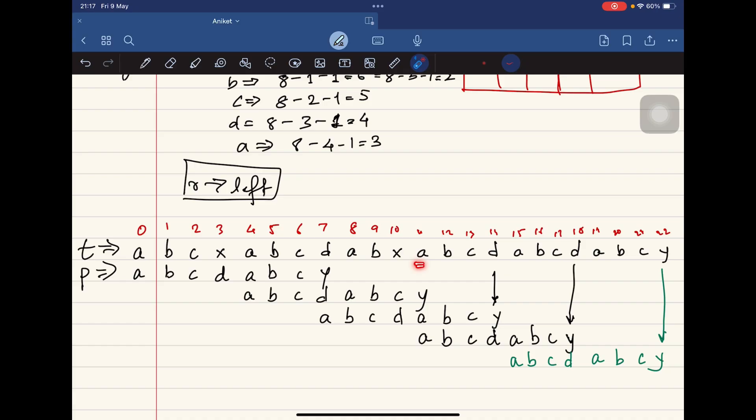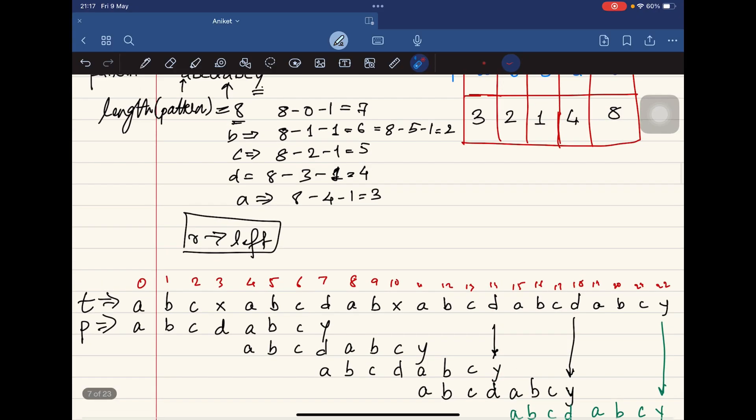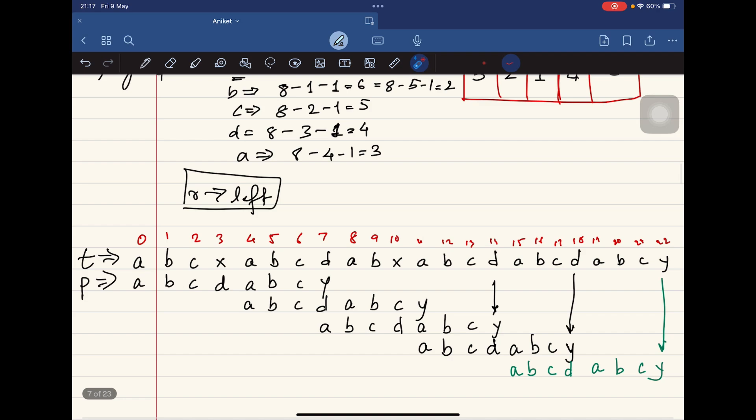Those three steps because the A value was 3: 1, 2, 3. Now again we see a mismatch with D. Check the value of D in the bad match table, it's 4. Switch 4, move right by 4: 1, 2, 3, 4. This is the string from this position.